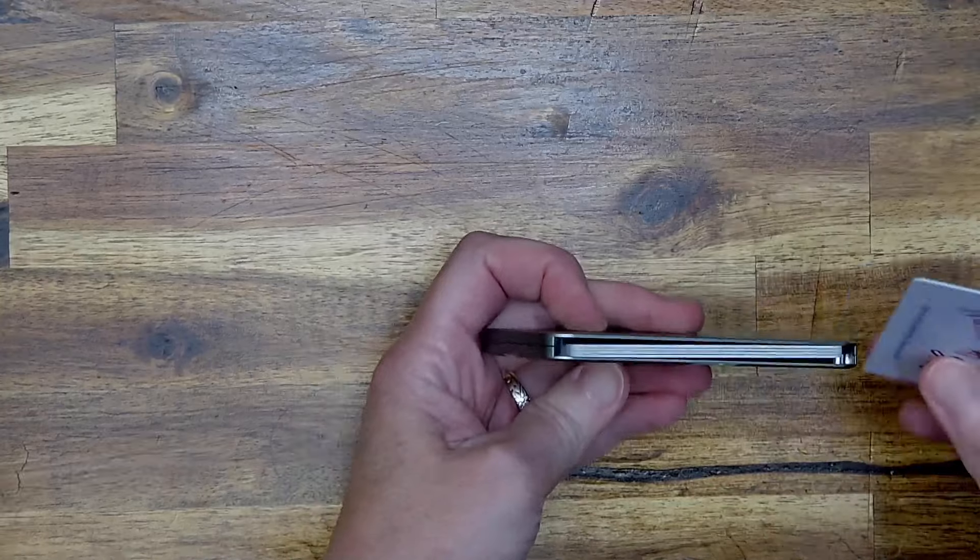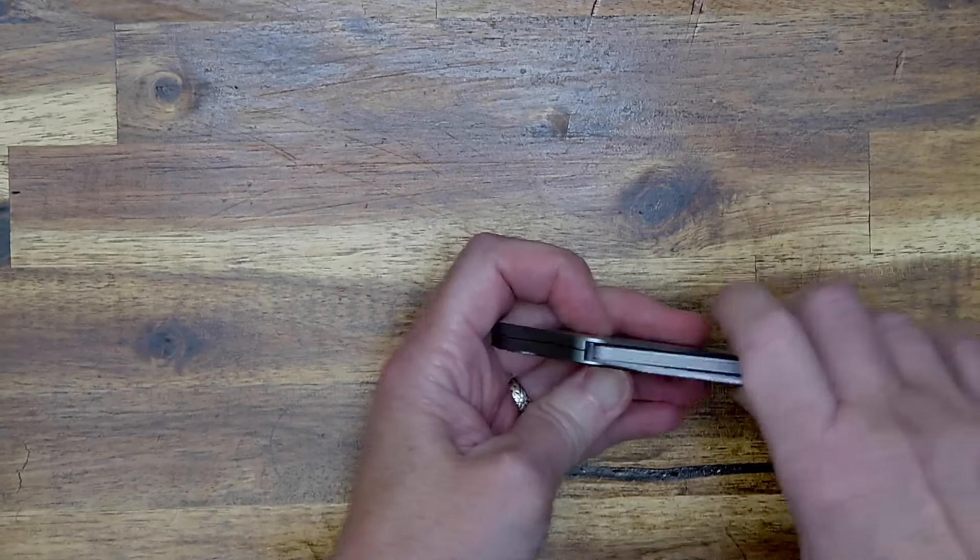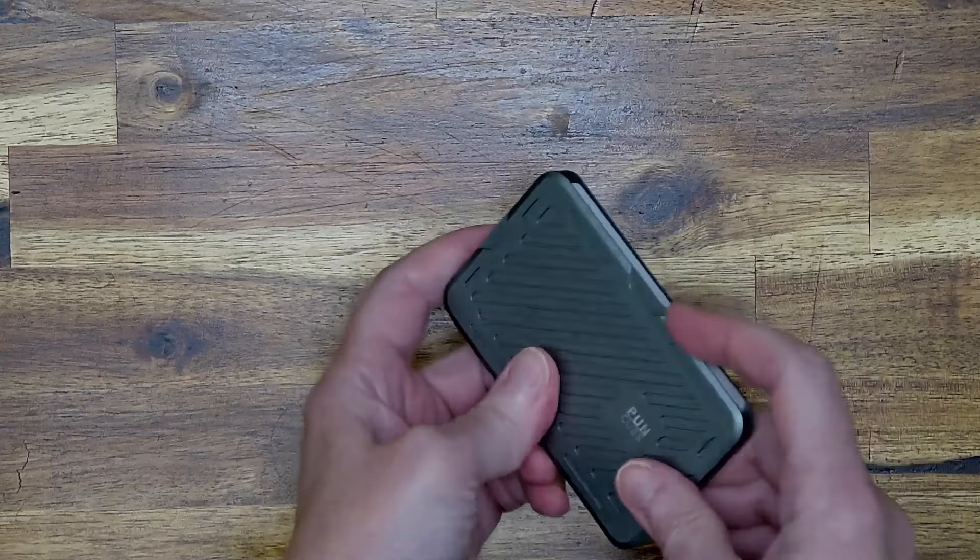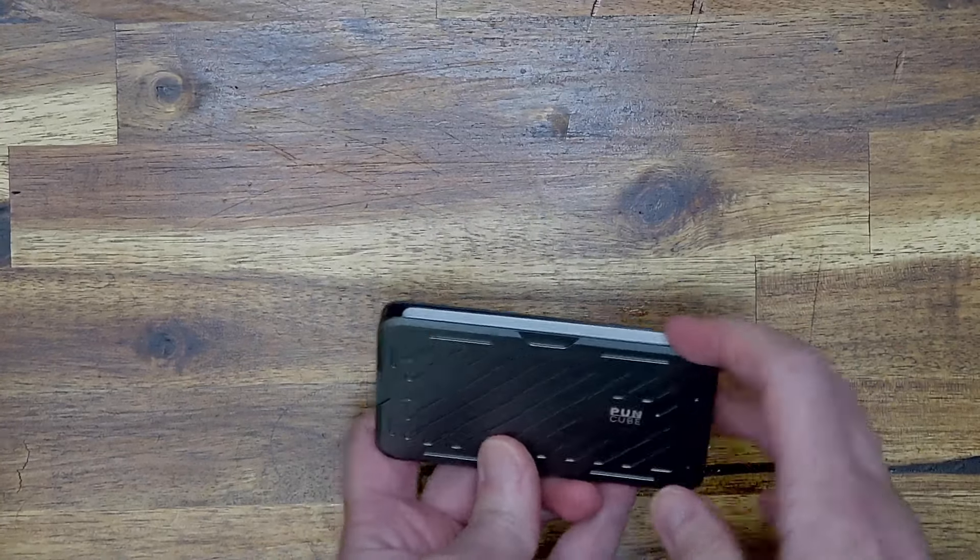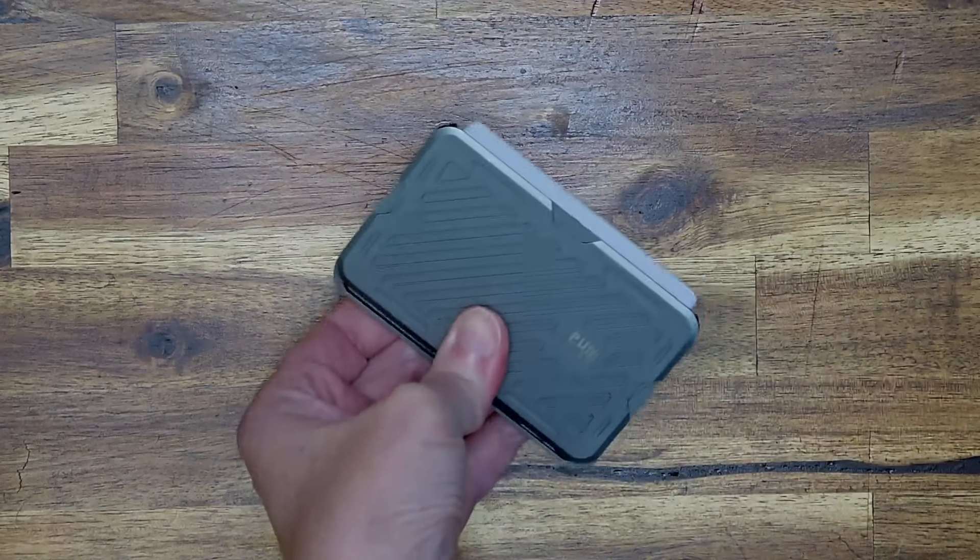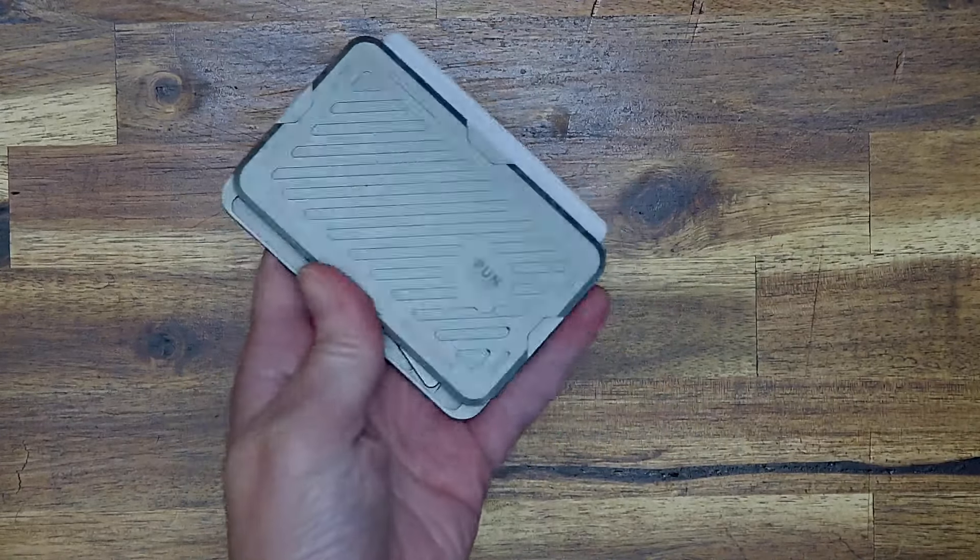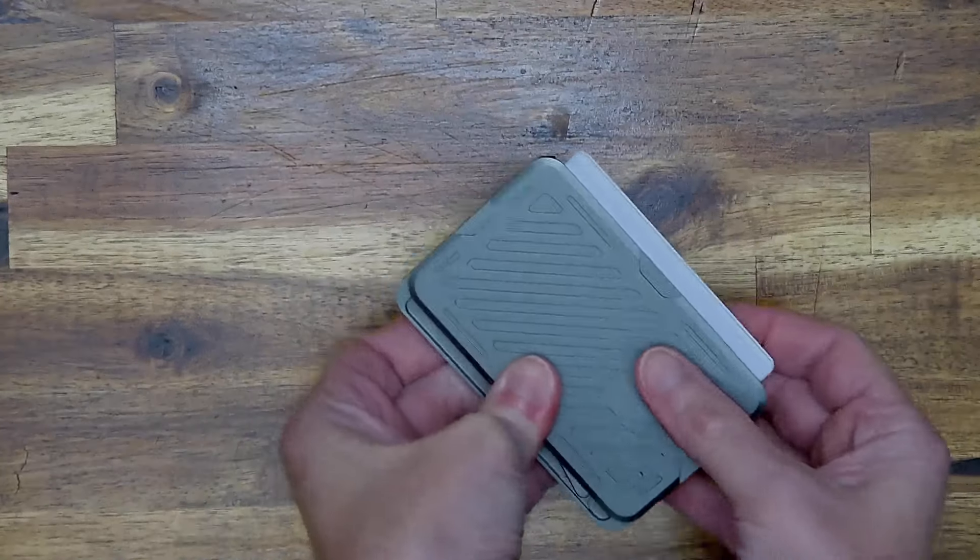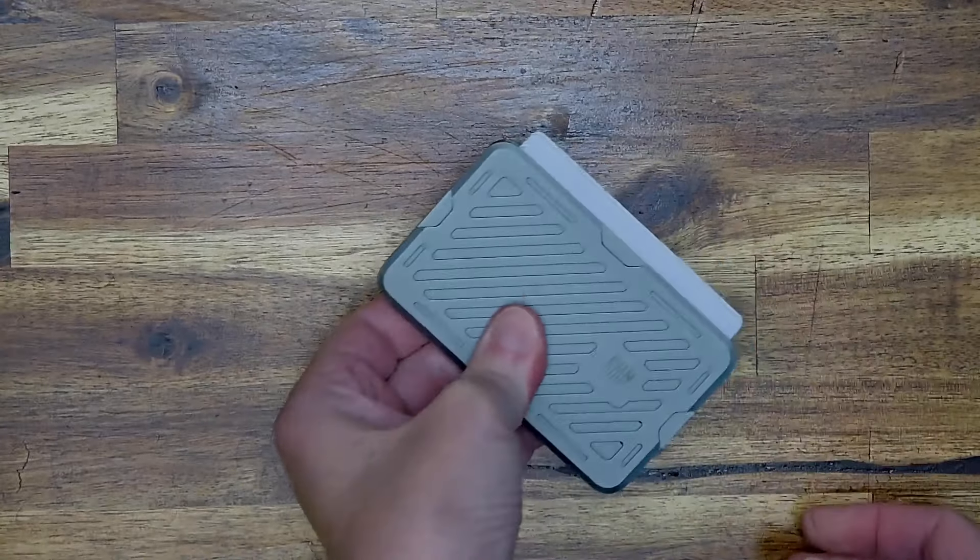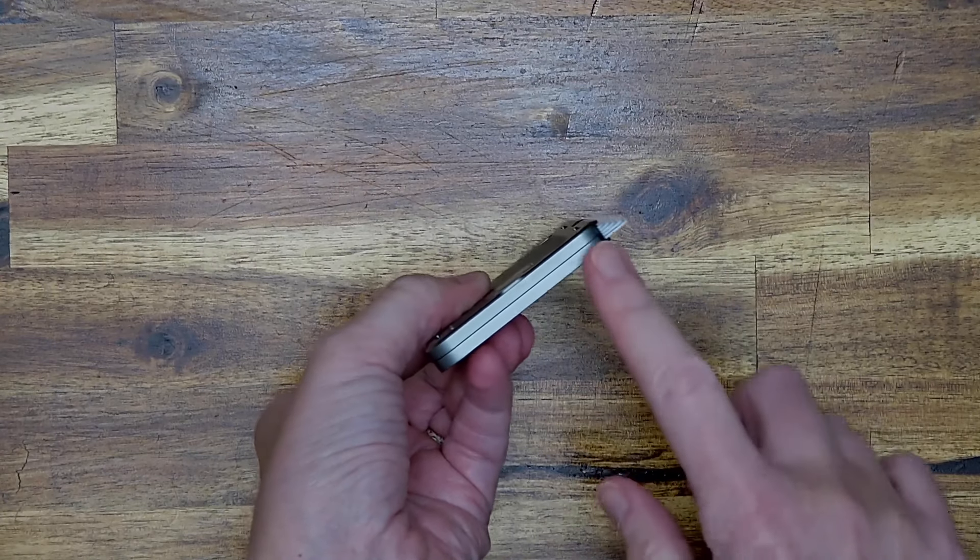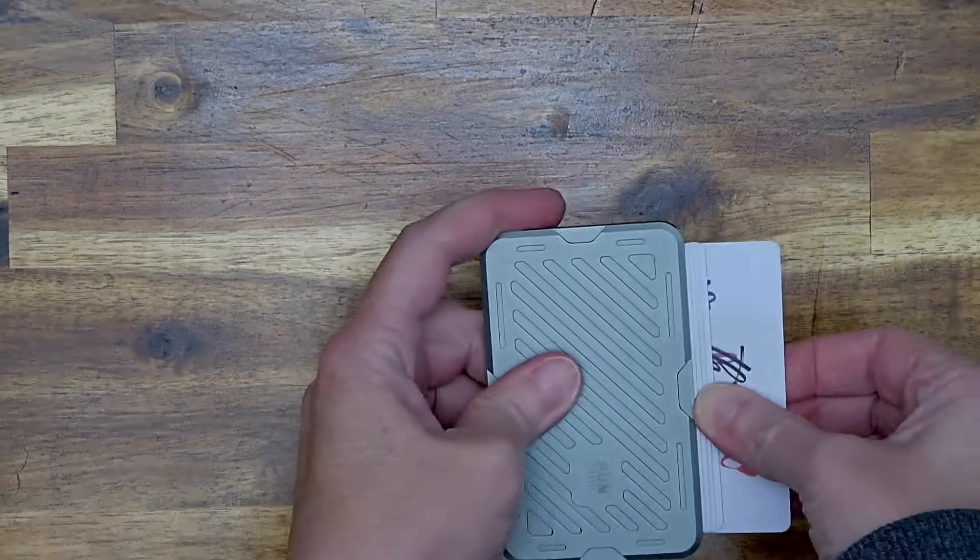Let's try a fifth card. That is the capacity of this wallet. Five standard plastic credit cards that aren't embossed. These are flat cards. Once you get to that fifth card, feels like there's a little bit of friction. I'm having a hard time sliding them all up. But it did work. You can see that they are fanned out and you can grab one.